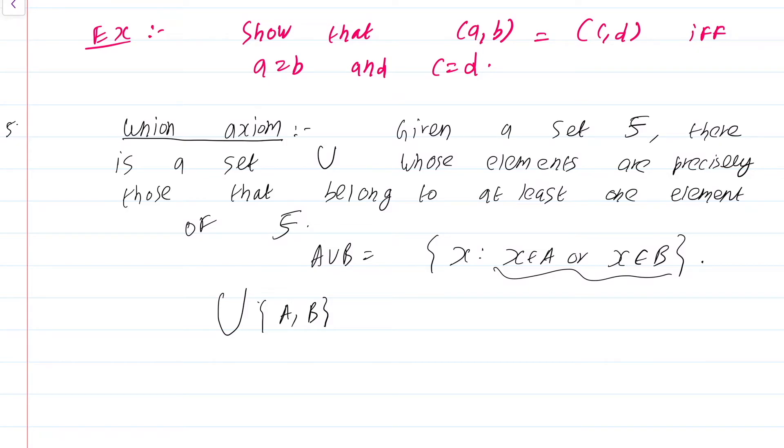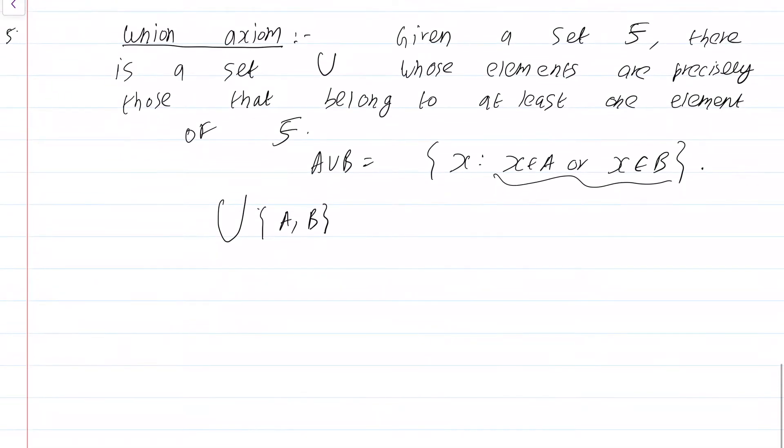So, to construct the set A union B, all you have to do is consider the set {A, B} which is a set by the pairing axiom and then just take the union. It is a bit of a convoluted way of just defining the union of two sets, but this axiom is far more general than just the union of two sets. You can take union of any number of sets.